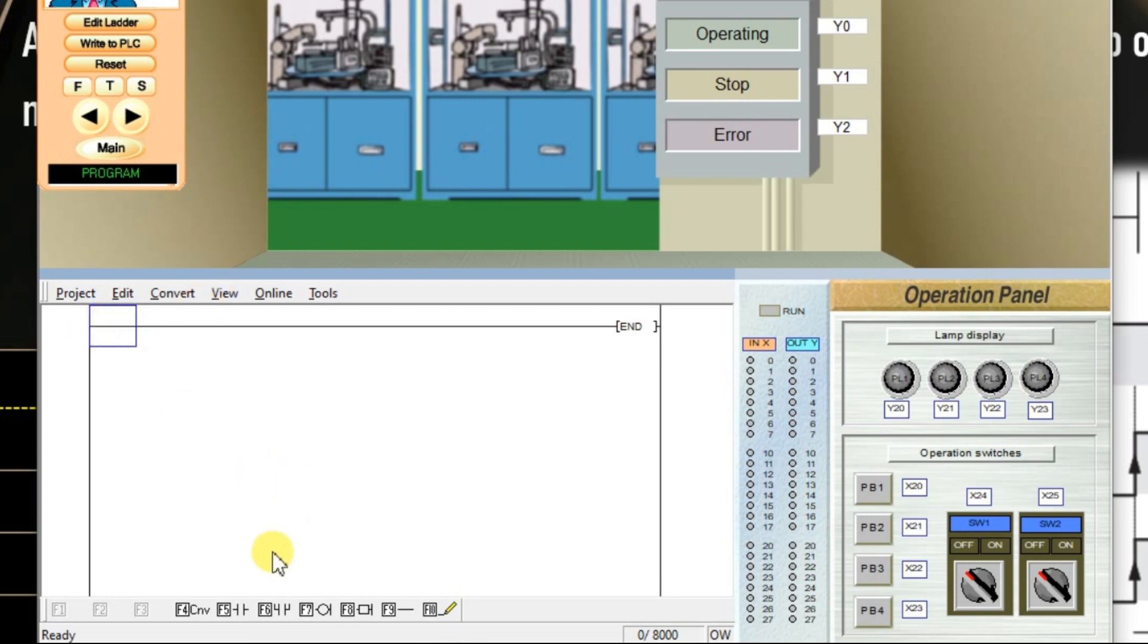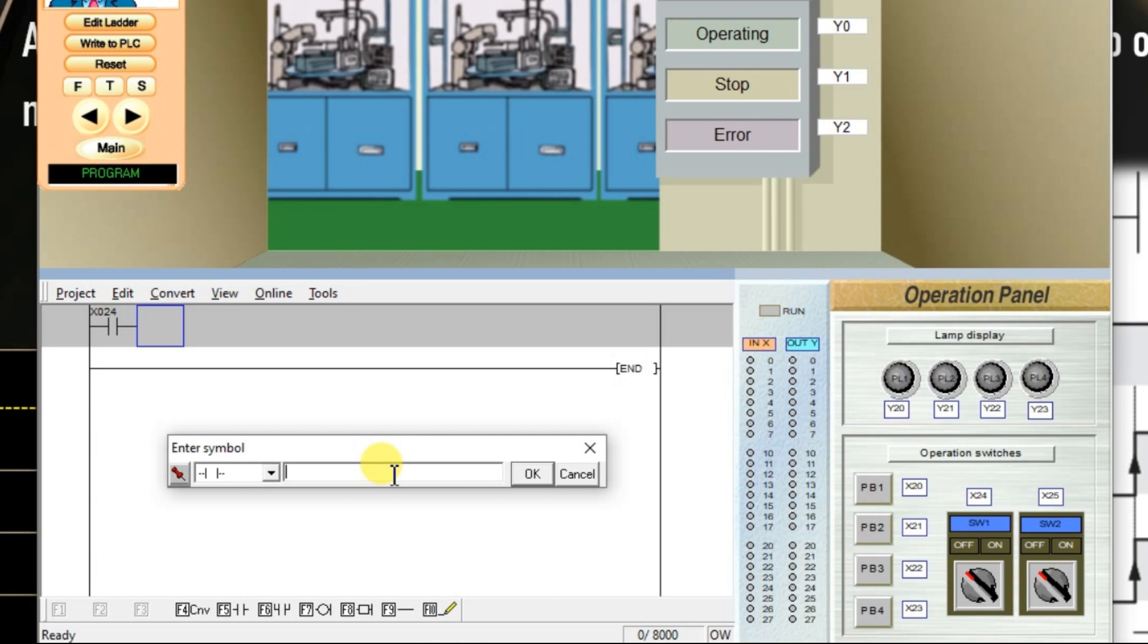Take one input and invoke contact. I am going to take x24. Click OK. Again, click input instruction open contact. Again enter second switch x25. I am using two cylinder switches x24 and x25, switch 1 and switch 2 in the logic.